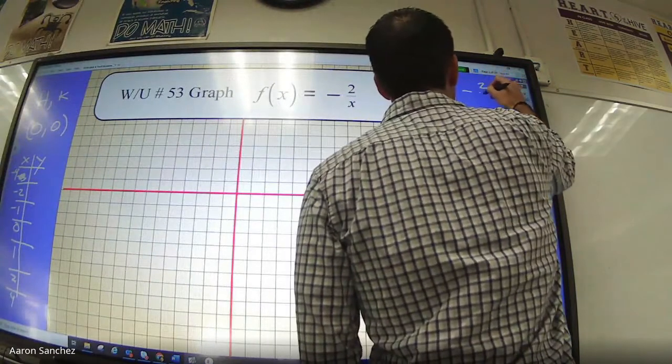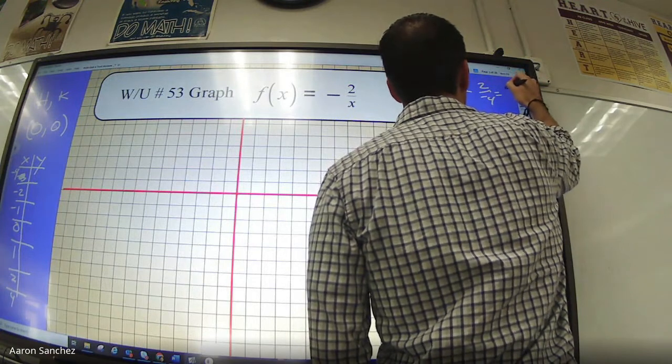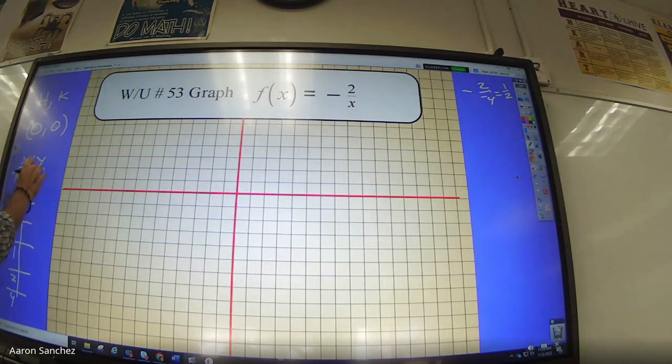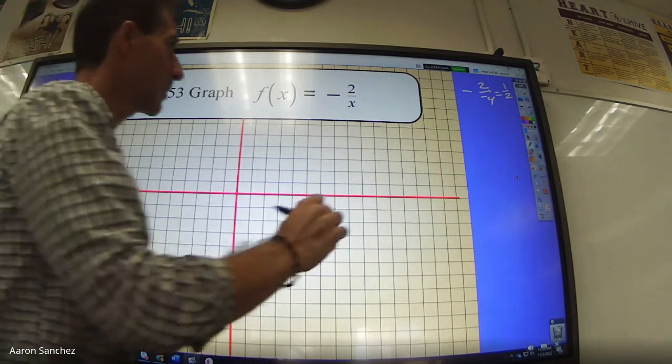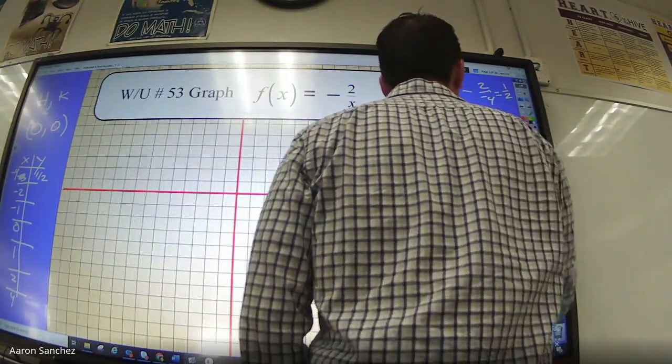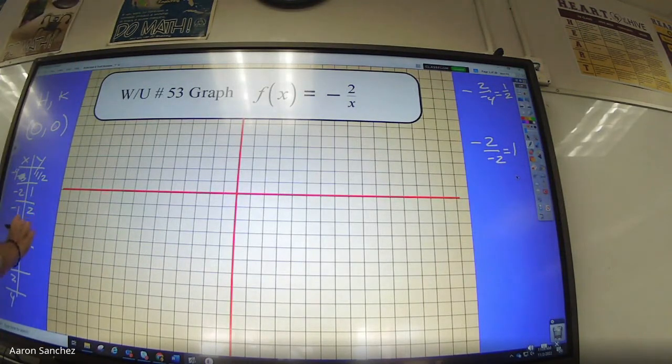Negative 2 over negative 4, that is 1 half. Negative 2 over negative 2, that is positive 1. Negative 2 over negative 1 is positive 2. 0 is no solution. 2 over 1 is negative 2, 2 over 2 is negative 1, 2 over 4 is negative 1 half. Was that too fast for anyone?